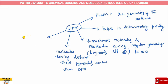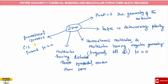In geometrical isomers, cis-isomers and trans-isomers differ in dipole moment. For the trans-isomer, the dipole moment is zero, and the cis-isomer has a high dipole moment.